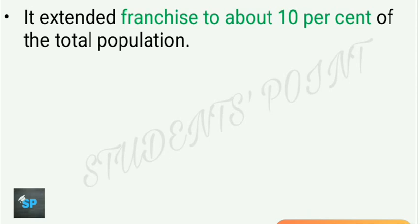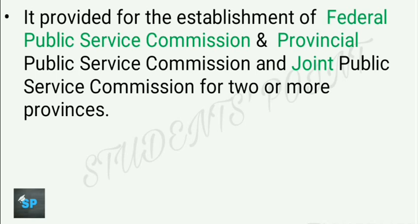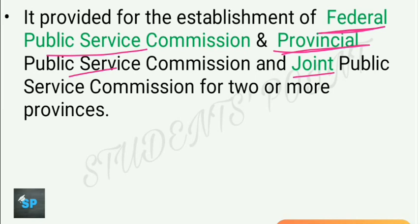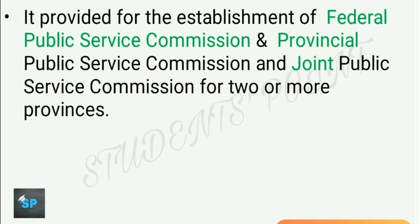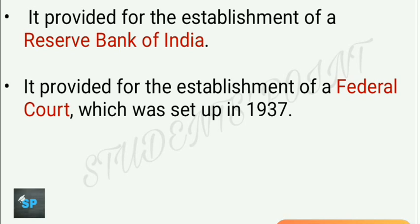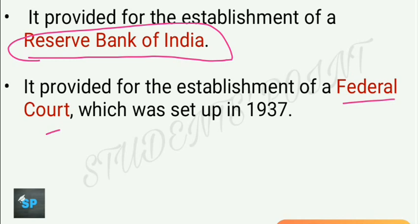This act extended franchise to about 10% of the total population. It also provided for the establishment of a Federal Public Service Commission. For two or more provinces jointly, a Joint Public Service Commission was to be established; for a particular province, a Provincial Public Service Commission; and for the entire India level, a Federal Public Service Commission. It also provided for the establishment of the Reserve Bank of India and for the establishment of a Federal Court, which was set up in the year 1937.